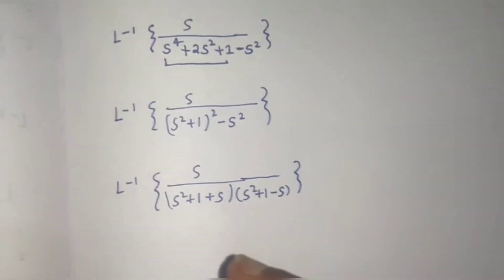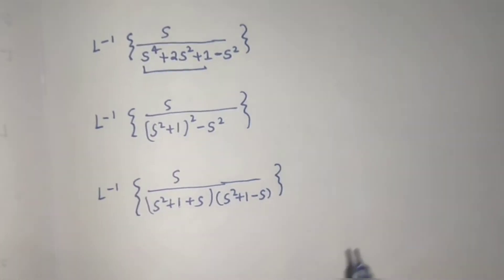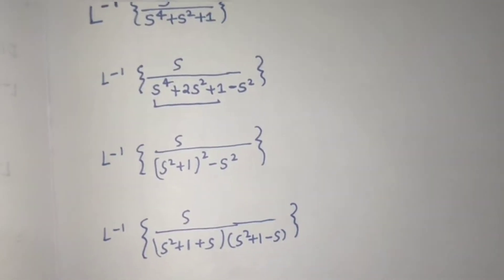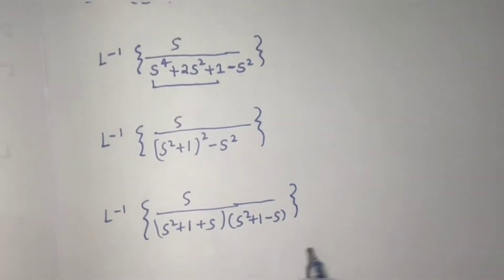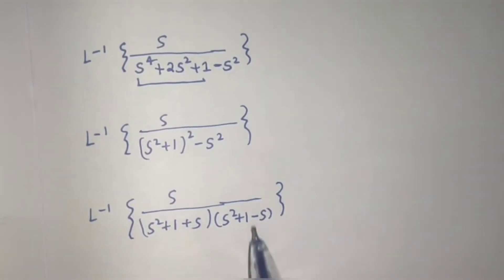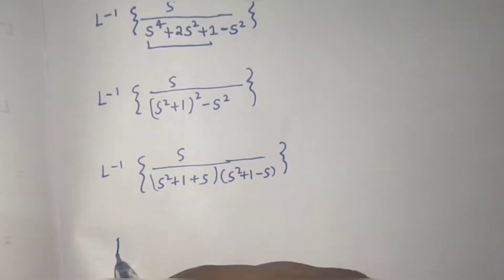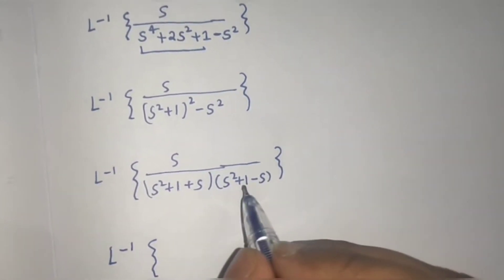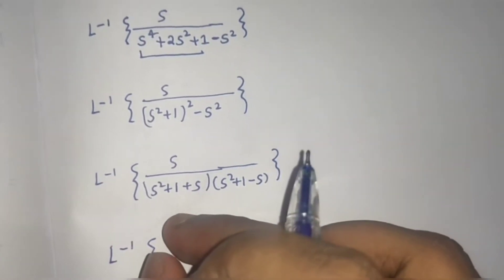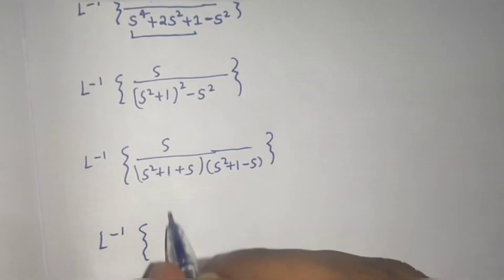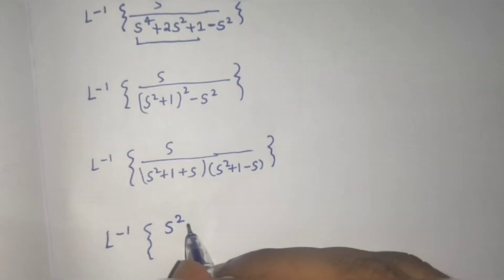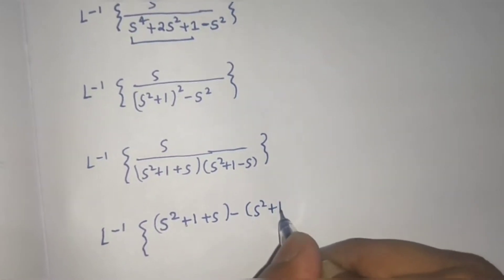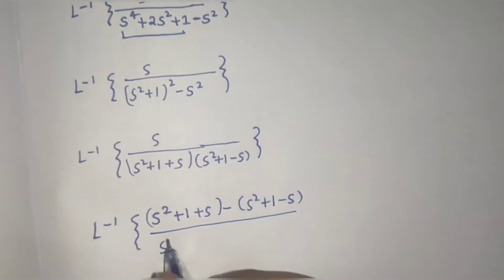Now again you can go for a set of partial fractions, but I always tend to ignore that step. What I do instead is try to create the denominator in the numerator. So if I do this minus this, or this minus this, let's see what happens. If I do this minus this: S squared plus 1 plus S, minus of S squared plus 1 minus S, divided by the same denominator.